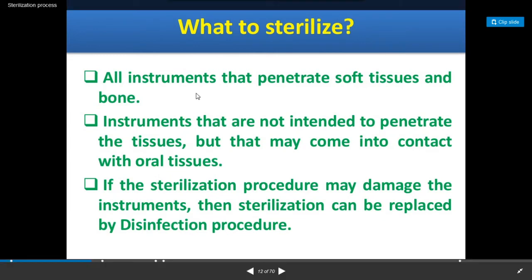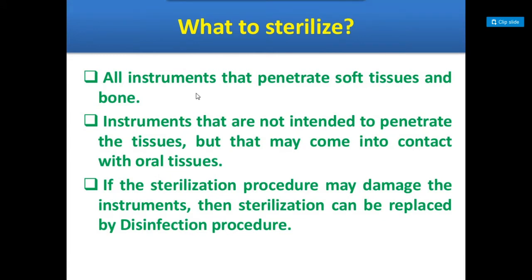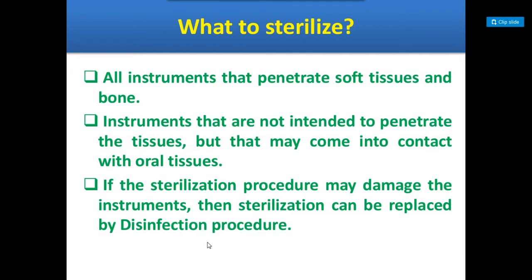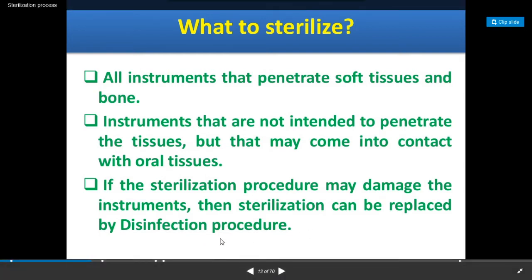What to sterilize? All instruments that penetrate soft tissues and bone, and instruments that are not intended to penetrate the tissues but that may come into contact with oral tissues. If the sterilization procedure may damage the instruments, then sterilization can be replaced by a disinfection process because in some cases, if sterilization is performed, that instrument or material can be damaged. In such cases, instead of sterilization, there is use of the disinfection process or disinfectant.